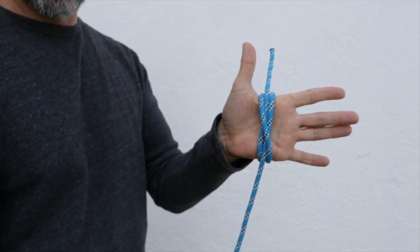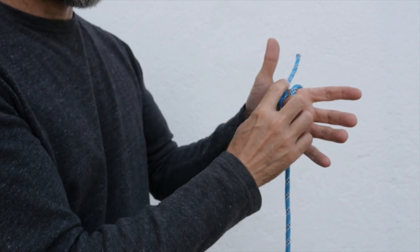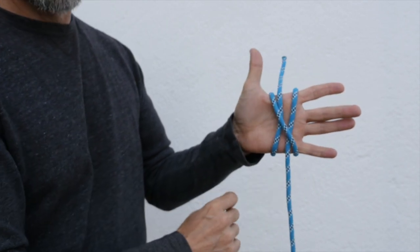In this case, the anchor point is my hand. If I spread the knot apart, you can see the structure better. Try to remember the shape because it'll be important as we continue.